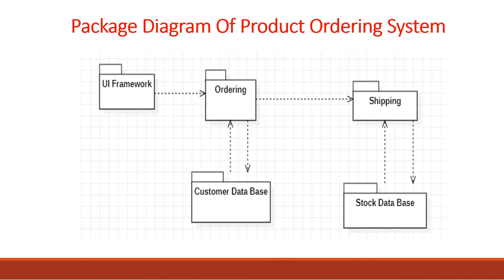The dotted lines connecting all these packages are called dependencies. It means the ordering package is dependent on the shipping package and is related to shipping, or ordering has some properties that are the same as shipping. All these are possibilities that can happen in a dependency.